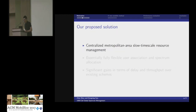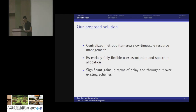In our work, we propose a centralized slow timescale resource management scheme for a very large metropolitan area network — say, a network consisting of thousands of APs and users. We allow fully flexible user association and spectrum allocation, and our numerical and simulation results show significant gains in terms of delay and throughput over existing conventional schemes.